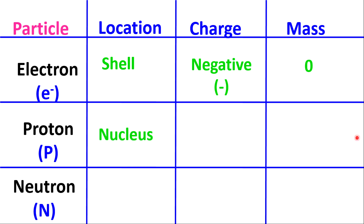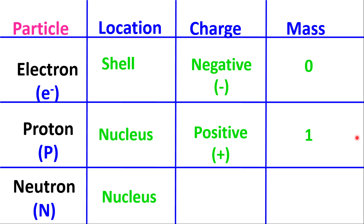Protons are found within the nucleus of the atom. Protons are positively charged and they have a relative mass of one gram. Neutrons are found within the nucleus of the atom as well. Neutrons, however, have no charge — a charge of zero, or neutrally charged. The relative mass of a neutron will be one gram. So notice: the charge of an electron is negative, proton positive, neutron has no charge or zero charge.